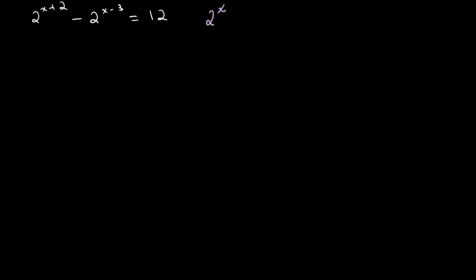So once again we need to find the common factor which in this question is also 2 to the power of x. Using our knowledge of the laws of indices we get that this is equal to 2 to the power of x times 2 squared minus 2 to the power of x times 2 to the power of negative 3. And this is equal to 12.